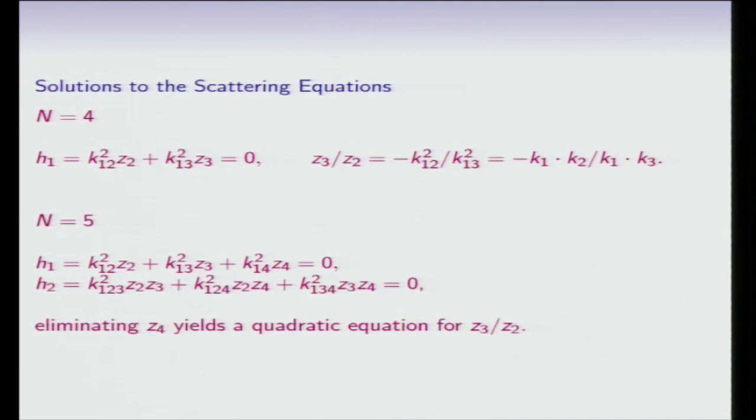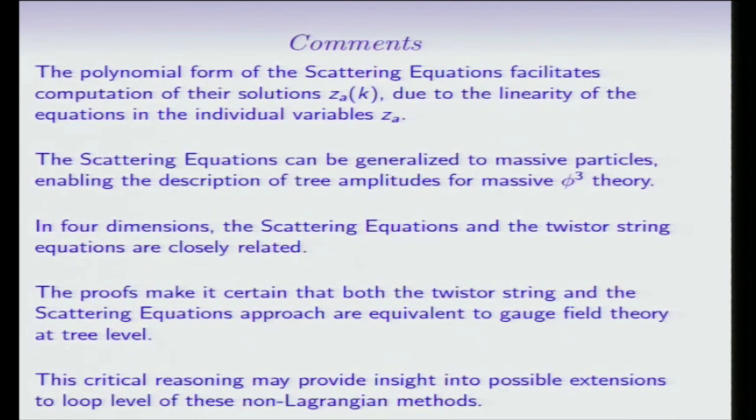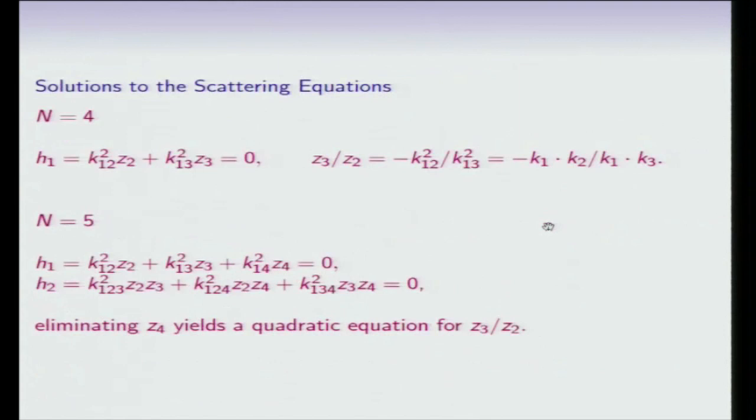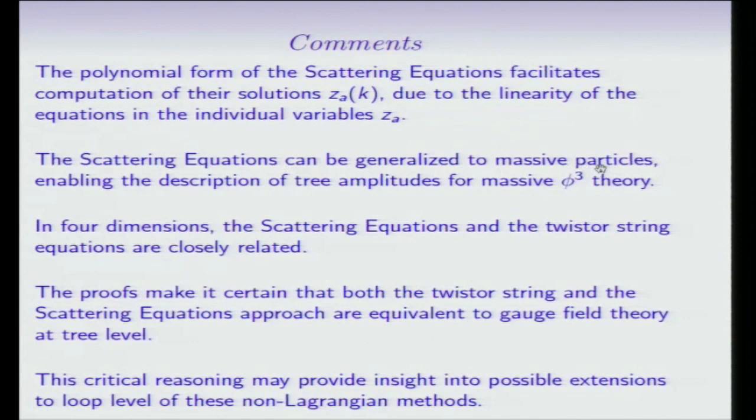So my conclusions are that the polynomial form of the scattering equations facilitates computation of their solutions, that is z_A of k, due to the linearity of the equations in the individual variables z_A. That each z_A, although they're homogeneous, the equations are homogeneous, each z_A, each different z_A appears only once. So it's an incredibly neat form of equations. The scattering equations can be generalized to massive particles, enabling the description of tree amplitudes for massive phi cubed theory. In four dimensions, if we go to that special case, the scattering equations and the twister string equations are closely related. The proofs that we've showed make it certain that both the twister string and the scattering equation approach are equivalent to gauge field theory at tree level. And we are hoping, and have every reason to believe, that this critical reasoning may provide insight into possible extensions to loop levels of both of these non-Lagrangian methods. Thank you.